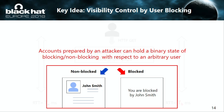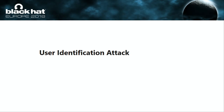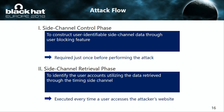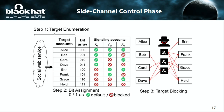I will explain the procedure of the user identification attack. Our attack has two separate phases. The side-channel control phase is required just once before performing the attack to construct user-identifiable side-channel data through user blocking. The side-channel retrieval phase is executed every time a user visits, to identify their accounts using data retrieved through the timing side channel. The side-channel control phase has three steps.